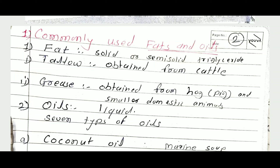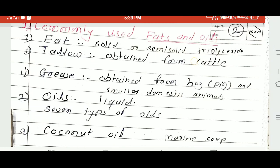Another type of fat is grease. Grease is obtained from hog — that is pig or smaller domestic animals. Grease is soft like butter, containing olein 60% and stearin 40%. It is mainly used for manufacture of best quality soap. For manufacturing hard soap we use tallow, and tallow is obtained from cattle.